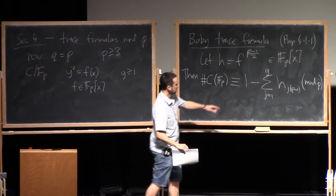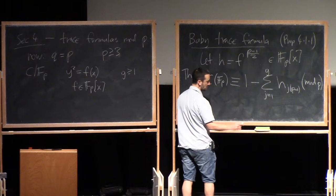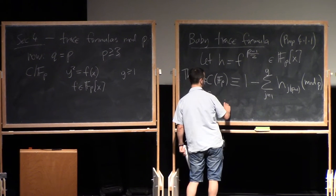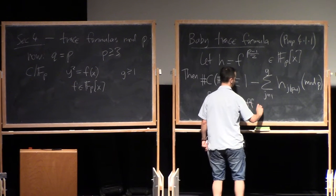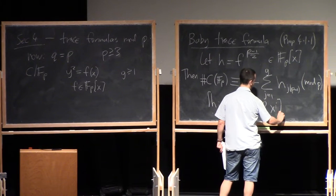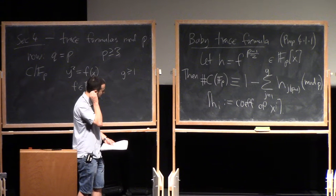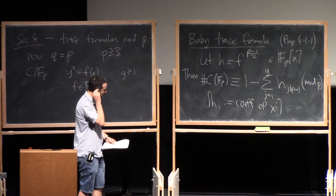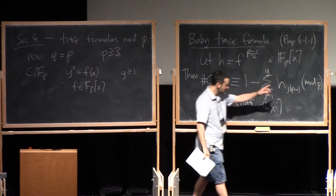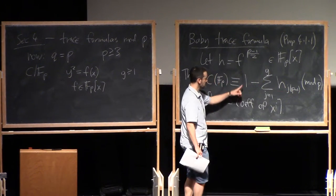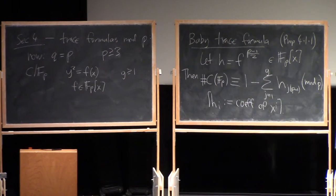Now, I should probably say what this notation means. H with a subscript. Whenever I write a subscript, I mean a coefficient. So H_I means coefficient of X to the I. Okay, so what this formula is saying is that I can figure out the number of points on the curve modulo P by looking at this sum. 1 minus sum of a bunch of coefficients of H. Let's take a quick example.